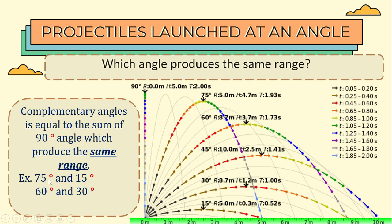Another example is 60 degrees and 30 degrees. 60 degrees plus 30 degrees, that is a total of 90 degrees. And they both have a record of range of 8.7.